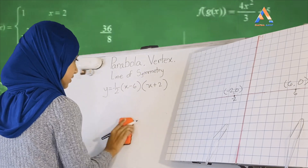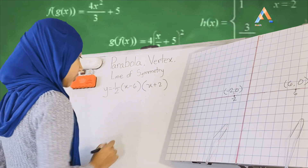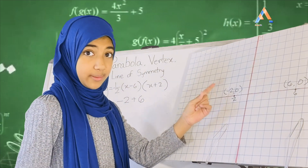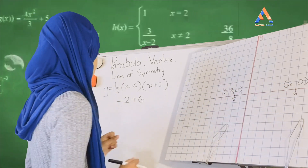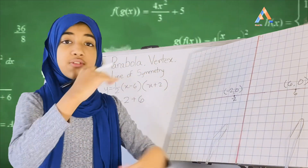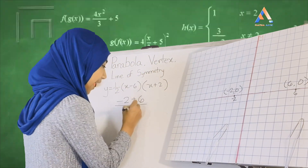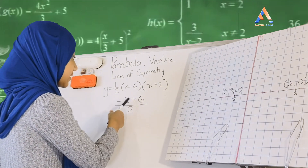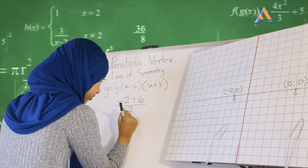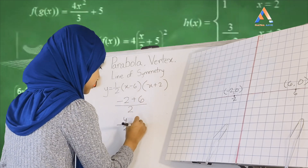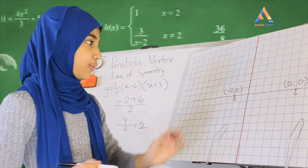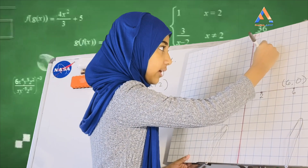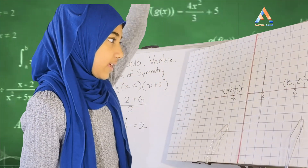To find the line of symmetry, we take the two x-coordinates, negative 2 and 6, add them together, and divide by 2. Negative 2 plus 6 is 4, divided by 2 equals 2. So x equals 2 is our midpoint and our line of symmetry. I'll draw that line — it goes right in between these two points.